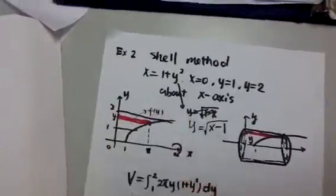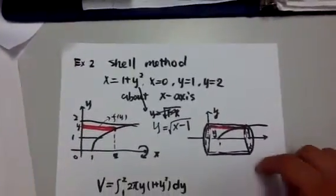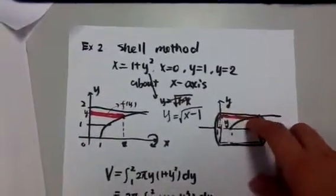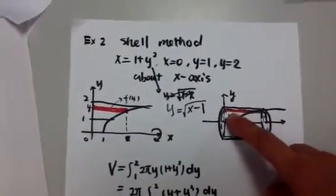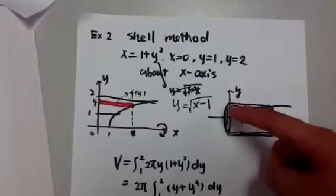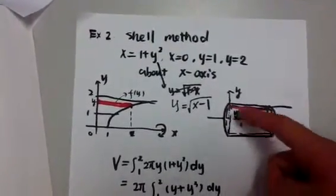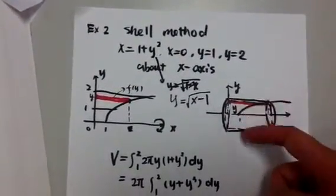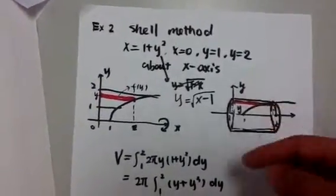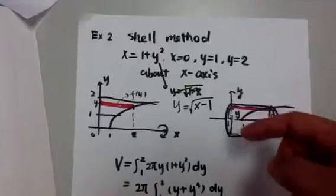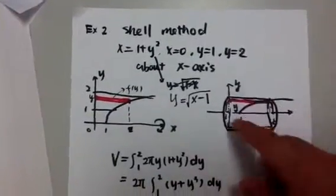Alright, so after I rotate my rectangle about x-axis, I will have a shape like this. Remember? Yeah, so it's a cylindrical shell. And the thickness is very tiny. So it's a very thin ring.